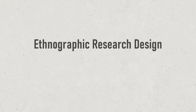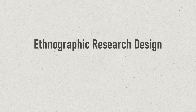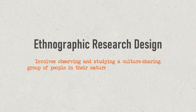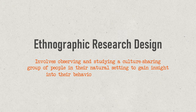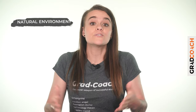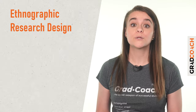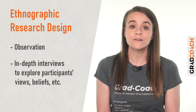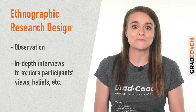Third on the list is ethnographic research design. This type of design involves observing and studying a culture-sharing group of people in their natural setting to gain insight into their behaviors, beliefs, and values. The focus here is on observing participants in their natural environment, as opposed to a controlled or artificial environment. This is not to say that ethnographic research design relies purely on observation — it typically also involves in-depth interviews to explore participants' views and beliefs. However, unobtrusive observation is a core component of the ethnographic approach.